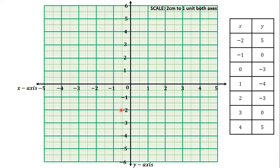We can now go ahead and plot the points on the graph sheet. The first point is negative 2, 5 — negative 2 on the x-axis and 5 on the y-axis, plotted here. Next is negative 1, 0 — negative 1 on the x-axis and 0 on the y-axis, plotted here. Then 0, negative 3 — 0 on the x-axis and negative 3 on the y-axis, plotted here.